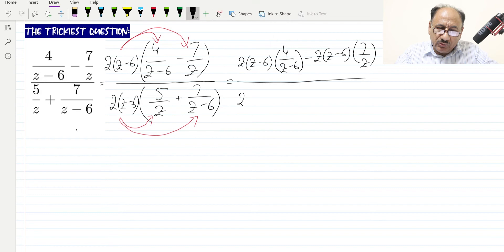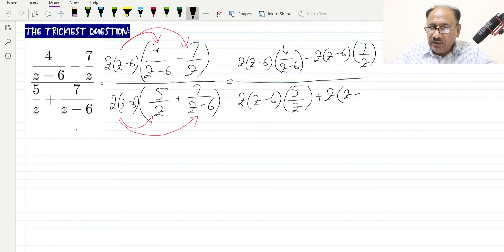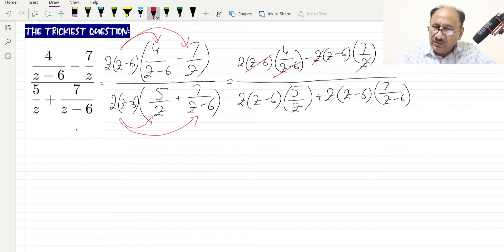Now comes the stage where we have to cancel. This z minus 6 can be cancelled with this z minus 6, and this z can be cancelled with this z. After cancellations, the remaining terms will be 4z minus 7 times z minus 6.